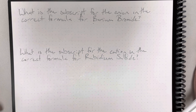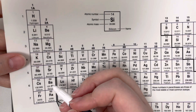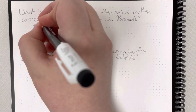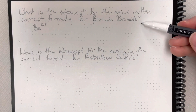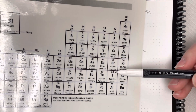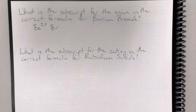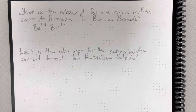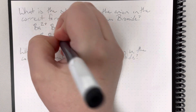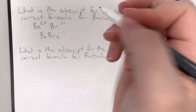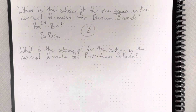What is the subscript for the anion in the correct formula for barium bromide? Barium's element symbol is Ba and it's in column 2, so it has two valence electrons. It gives those away, giving it a charge of positive 2. Bromide is secretly bromine, symbol Br, in column 7. Having seven valence electrons but wanting eight means it steals one. Stealing is bad, so bromine has a charge of negative 1. I crisscross charges for subscripts. The anion is the negative ion — that's bromine — so the subscript for my anion is 2.